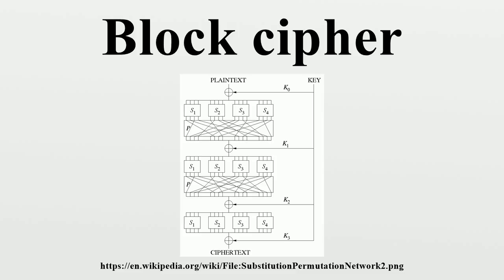ARX Operations. Many modern block ciphers and hashes are ARX algorithms. Their round function involves only three operations: modular addition, rotation with fixed rotation amounts, and XOR. Examples include Salsa20, Speck, and Blake. Many authors draw an ARX network, a kind of data flow diagram, to illustrate such a round function. These ARX operations are popular because they are relatively fast and cheap in hardware and software, and also because they run in constant time and are therefore immune to timing attacks.